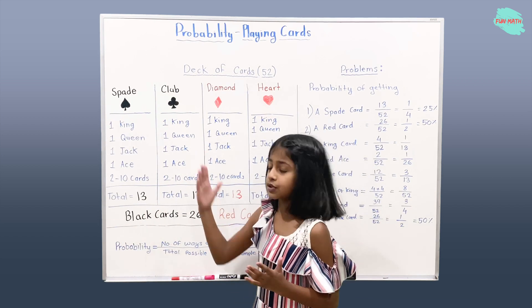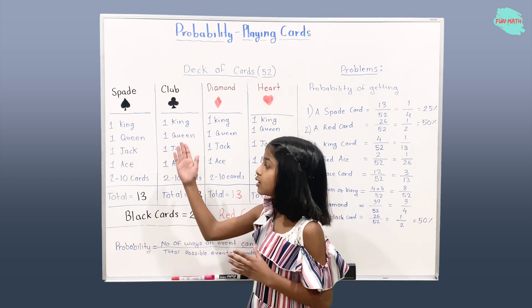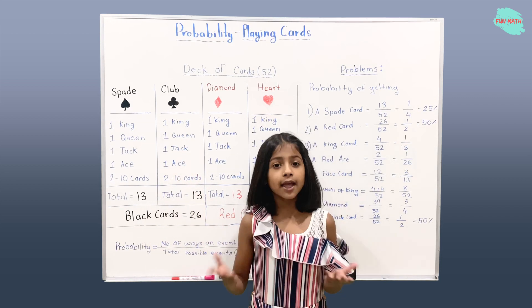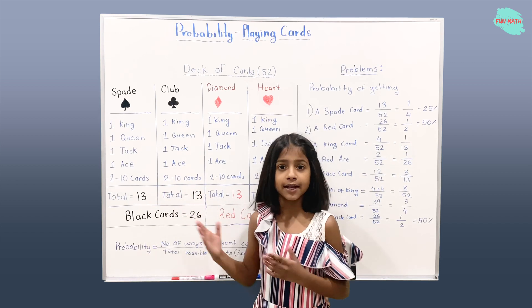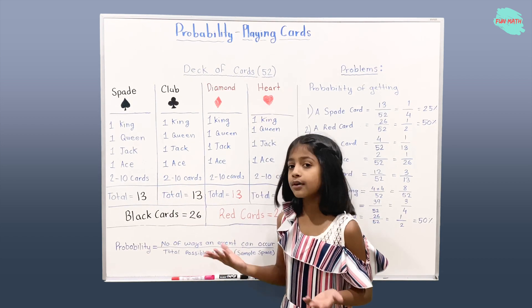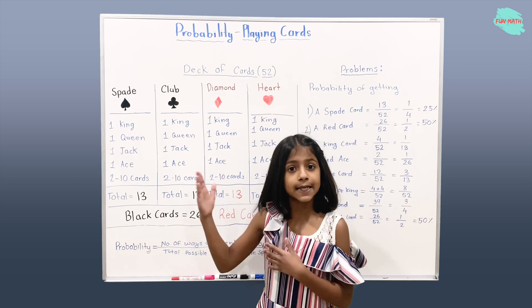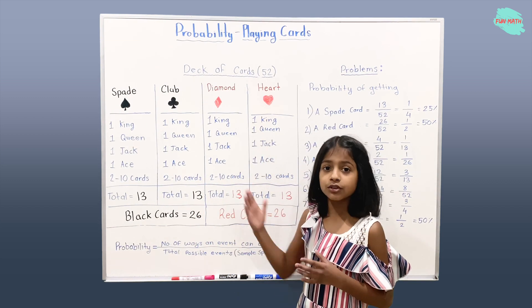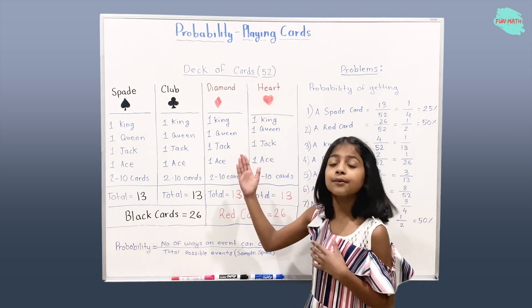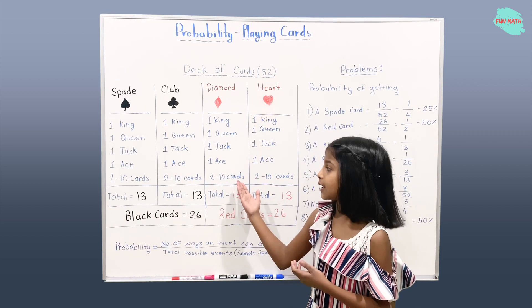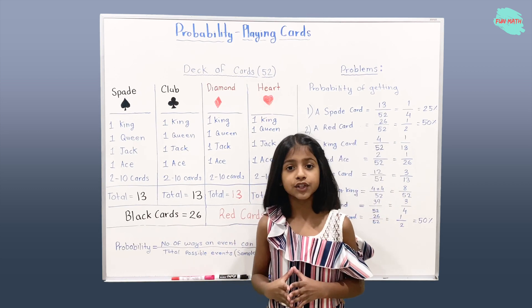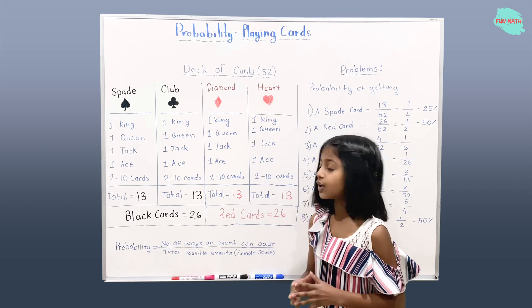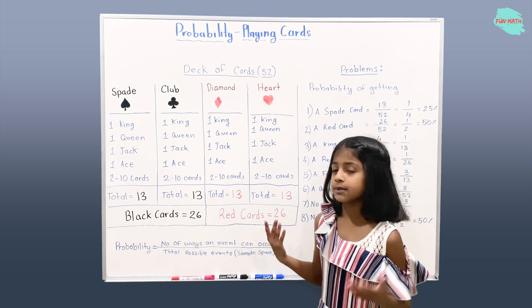In Club Suit we have one King, one Queen, one Jack, one Ace and cards from 2 to 10. In total we have 13 Club Cards. In Diamond Suit we have one King, one Queen, one Jack, one Ace and cards from 2 to 10. In total we have 13 Diamond Cards.